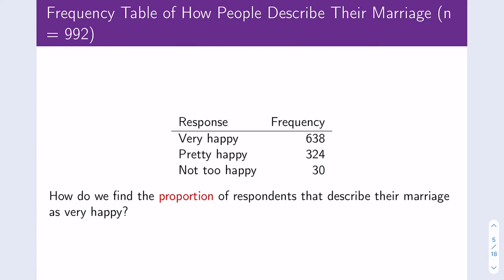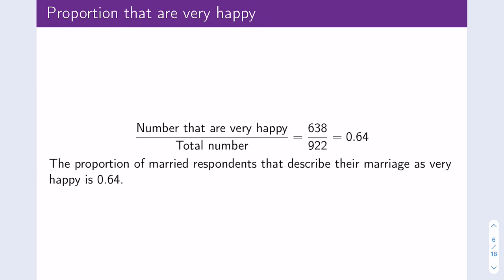Using this frequency table, we can find the proportion of respondents that describe their marriage as very happy. We take the number that are very happy and divide it by the total number of people who responded to that question. 638 participants said they were very happy, and 922 people responded to this question, so the proportion is 638 divided by 922, which equals 0.64.